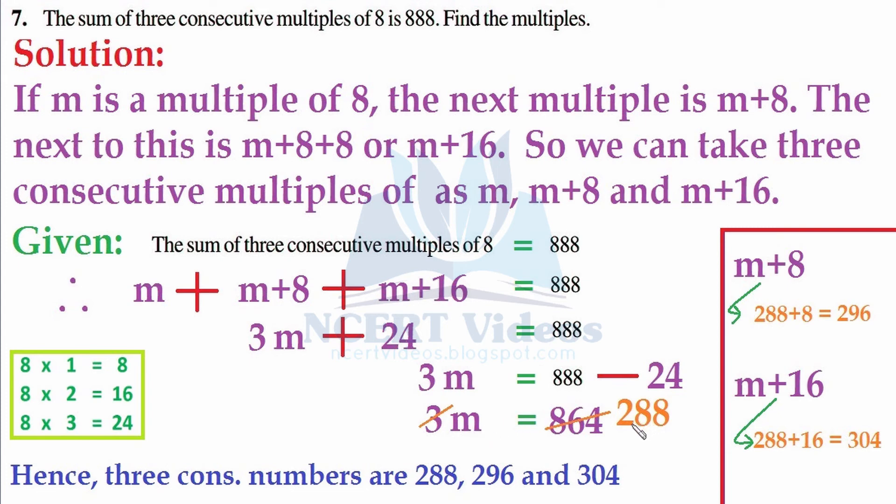We have found the value of m as 288. What would be the next consecutive multiple? It is the addition of 8 to this m, therefore 288 plus 8 gives you 296. And what would be the third multiple of 8? It would be m plus 16, so m is 288 plus 16, that is equal to 304.